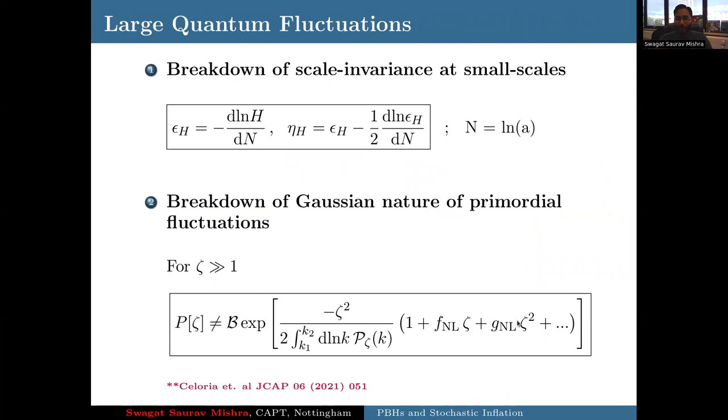If you want to produce large quantum fluctuations during inflation, you need to take care of two interesting or important things. The first thing is breakdown of scale invariance at small scales, which I explained - you need to have blue-tilted large fluctuations. Just to make the notations clear, there are two slow roll parameters during inflation. One is epsilon, which has to do with the rate at which Hubble parameter changes as a function of expansion or number of e-folds. The second parameter eta has to do with how the first slow roll parameter changes, and it's this eta parameter which is going to be very important for us afterwards. The other thing is that you can also breakdown the Gaussian approximation in the sense that when you form primordial black holes, you may not be drawing from a Gaussian distribution. This kind of Gaussian expansion might breakdown for large fluctuations. We had a team discussion on this topic last year at cosmology from home.